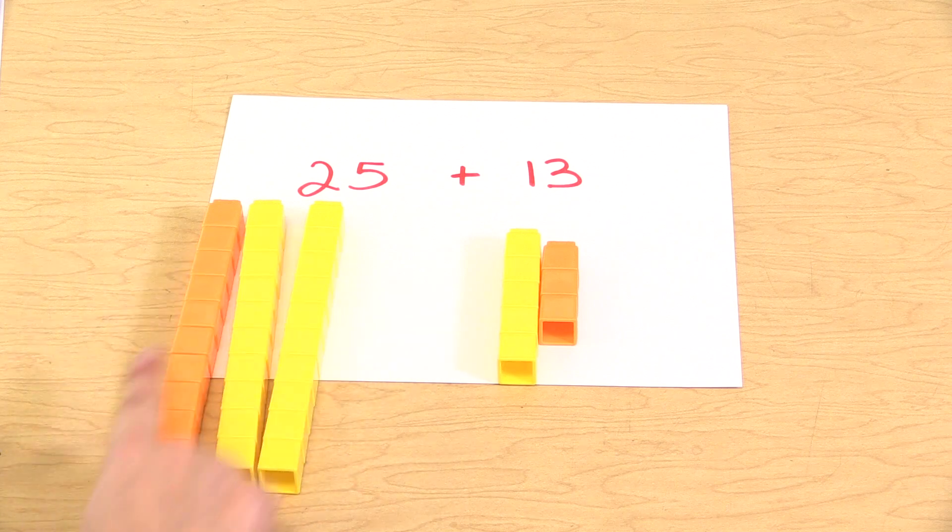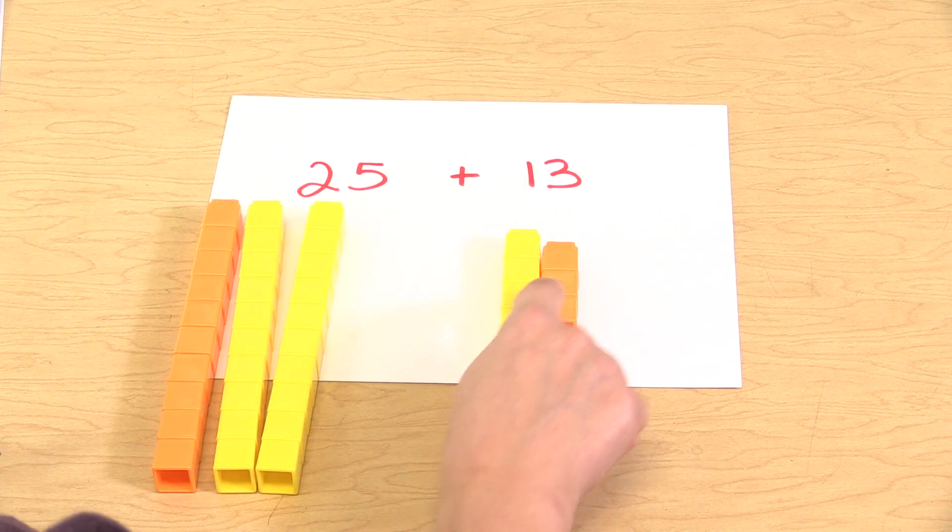And so they would be able to see that we have three tens and eight ones.